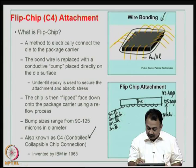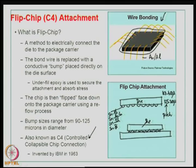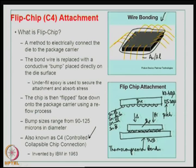We are going to look at these things in the latter part of this course. Once you have a flip chip ready to be assembled, you require a substrate. The requirement for this bonding is that the substrate should have bond pads which are also very small in size, matching with the area of the solder bump. You apply heat and pressure to establish a connection using thermocompression bonding, and then you apply an underfill material to protect your substrate. This is a method to electrically connect the die to the package carrier — the bond wire is replaced by a conductive bump placed directly on the die surface.